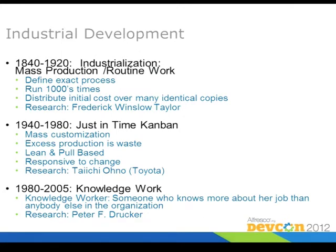As a background, we have to look at the development of industrialization and how we came to where we are. In the early 19th century — 1840 to 1920 actually — there was industrialization, and the whole thing was about mass production. They set up plants, identified the steps necessary, and then exactly followed the procedures to produce things thousands of times. The initial cost to set up production was kind of high, but producing one single item was relatively cheap because everything was automated and the setup cost was distributed over many identical copies.